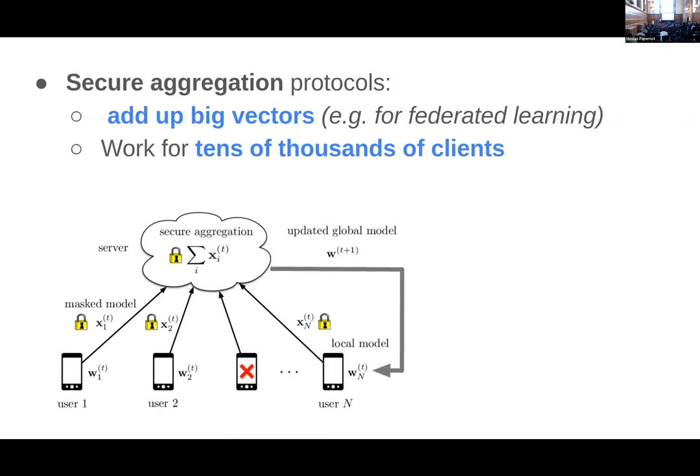Olympia is trying to solve a problem that I want to set up first. We have secure aggregation protocols — we saw a few new ones just in this session. There are a whole bunch of these now, and basically they're designed to add up really big vectors, for example when you're trying to do federated learning. Some of them are designed to work for lots and lots of clients — some recent ones work for tens of thousands of clients.